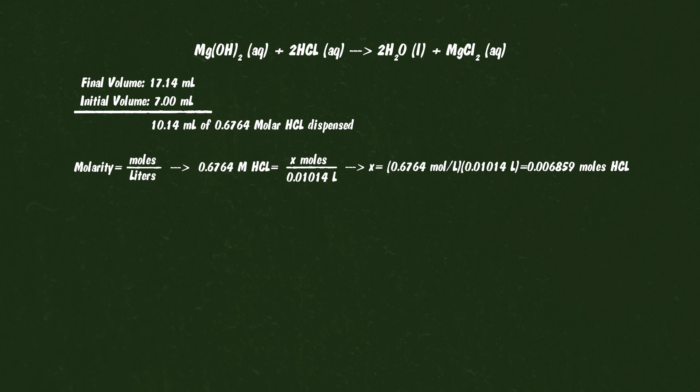Now that we can solve for the moles of acid required to react with magnesium hydroxide, we can use stoichiometry and our balanced equation to calculate the moles of base in the milk of magnesia. We started with 5 milliliters of milk of magnesia. Now we know that the 5 milliliter volume had 0.003429 moles of magnesium hydroxide. So we can figure out the amount of base in a 5 milliliter volume.